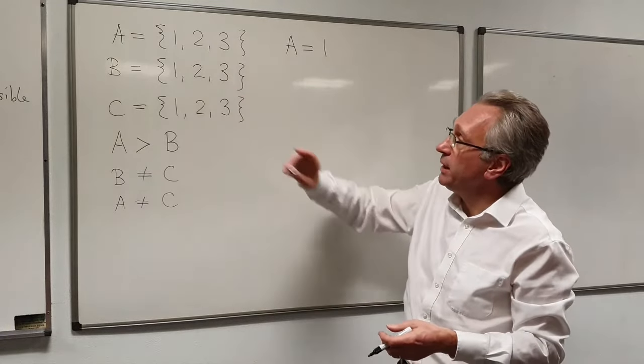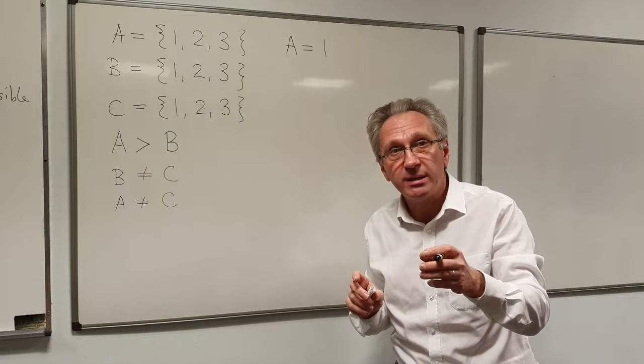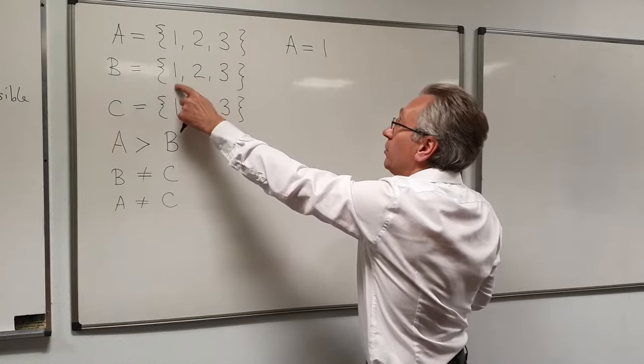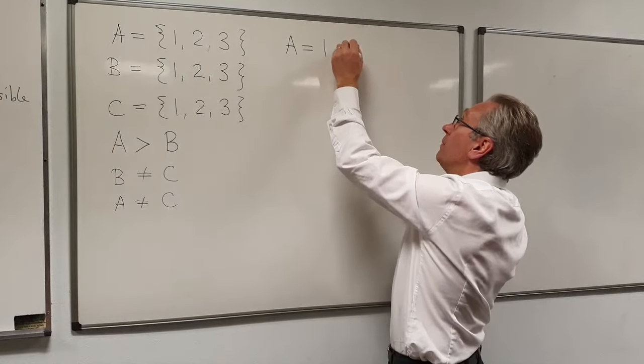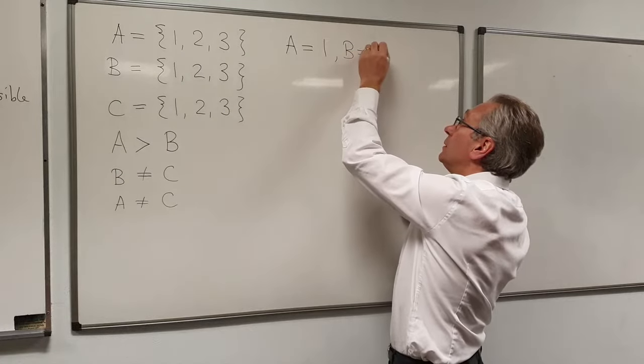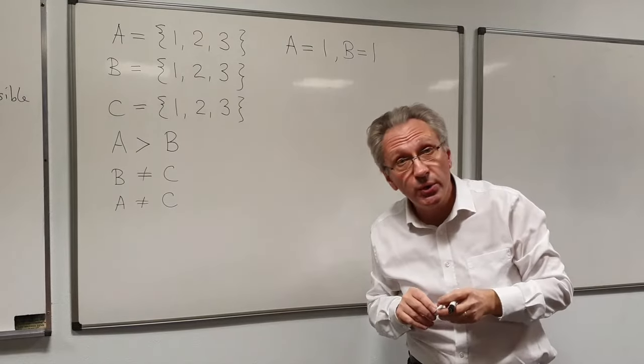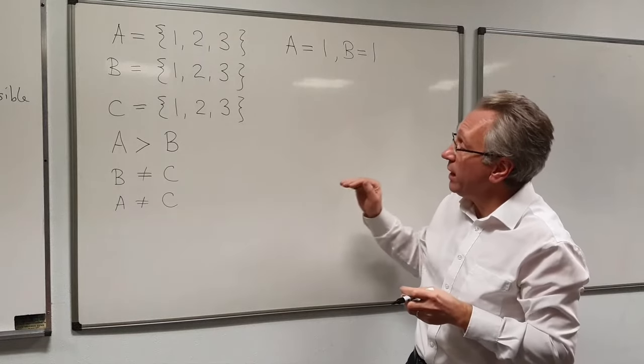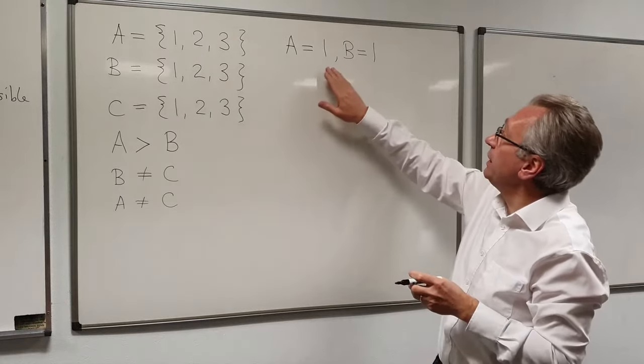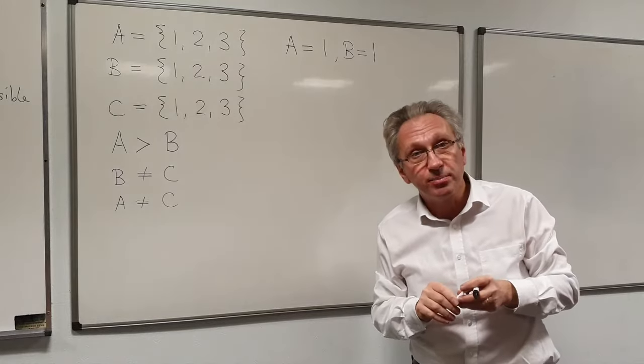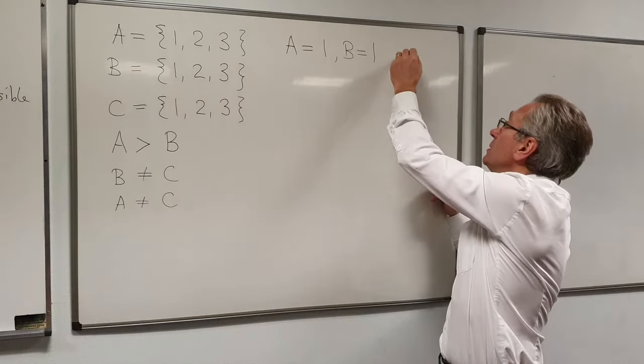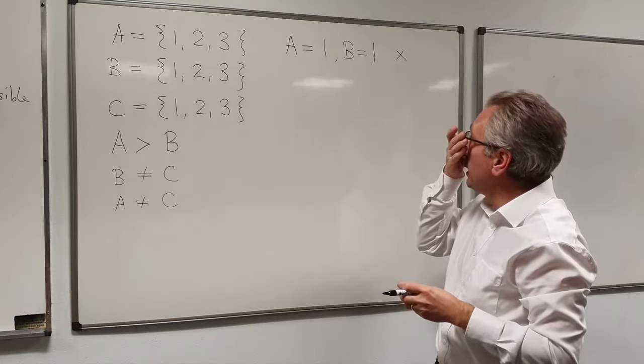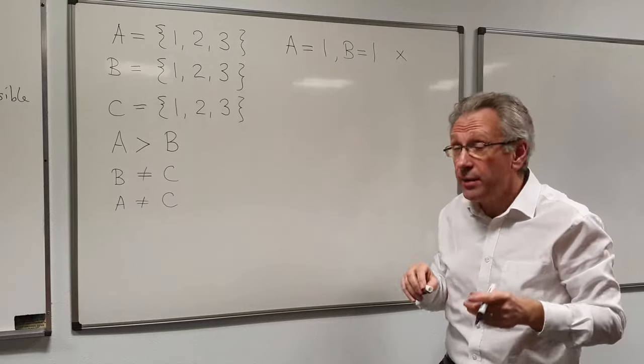So now I move on to B. The backtracking algorithm is systematic. It goes through all of the values in turn, left to right. So we start with B is equal to 1. We've now got a partial assignment with two values in it, and we check them against the constraints. So let's look now. A is greater than B. Ah, that's broken. A is not greater than B here. So therefore, that's not a possible assignment of those values. And therefore, I have to backtrack.